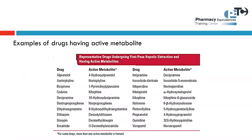This was the last question today. We also have a list of important drugs that have active metabolites: amitriptyline, buspirone, codeine, desipramine, dextromethorphan, dextropropoxyphene, diltiazem, imipramine, isosorbide dinitrate, meperidine, metoprolol, propranolol, naloxone, morphine, benzoyecgonine, quinidine, and verapamil — all of them have an active metabolite.